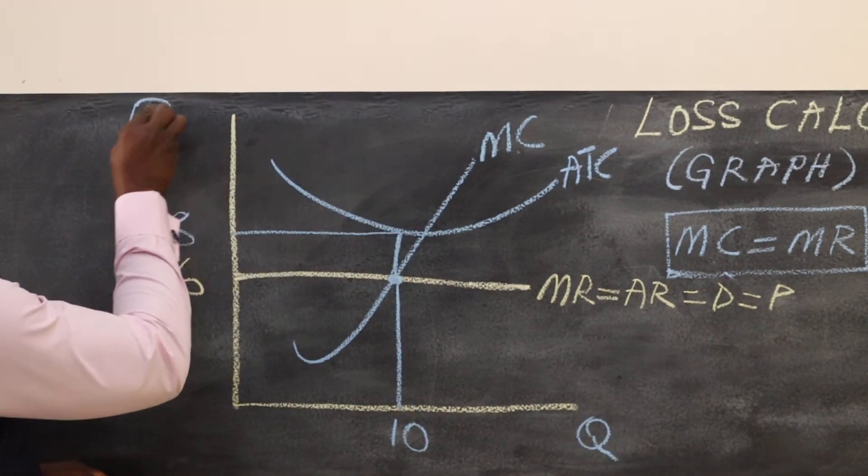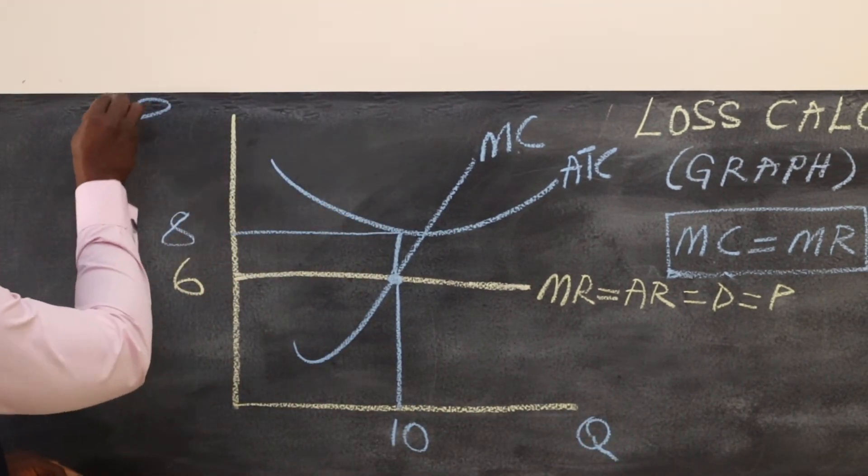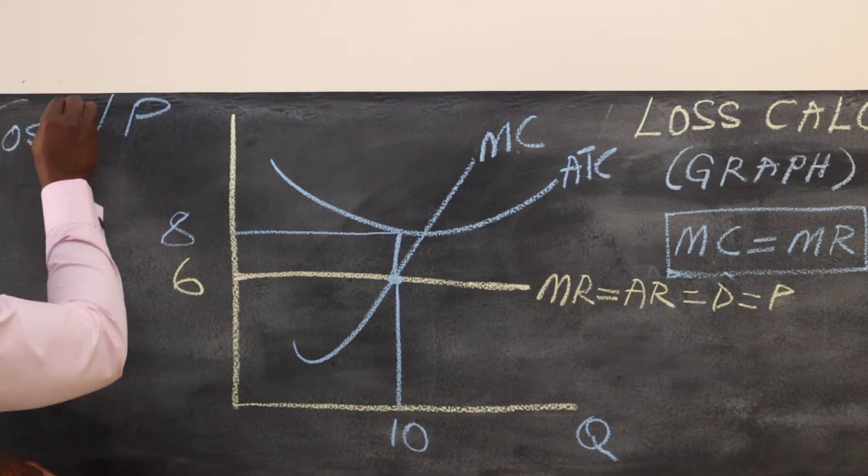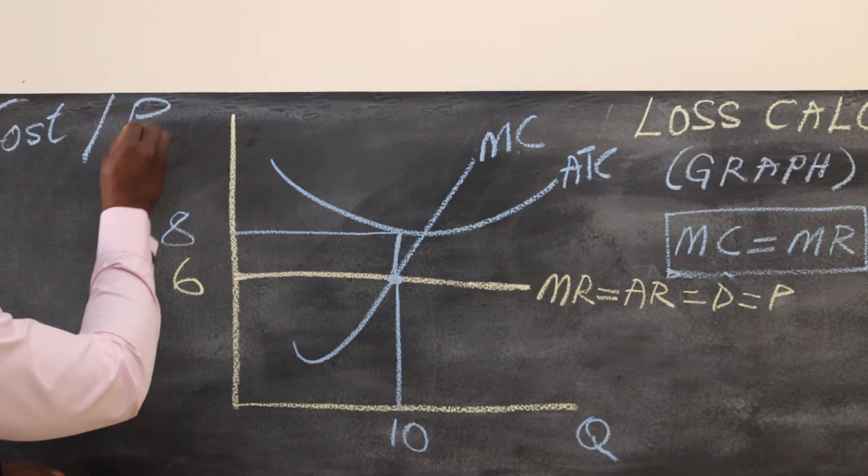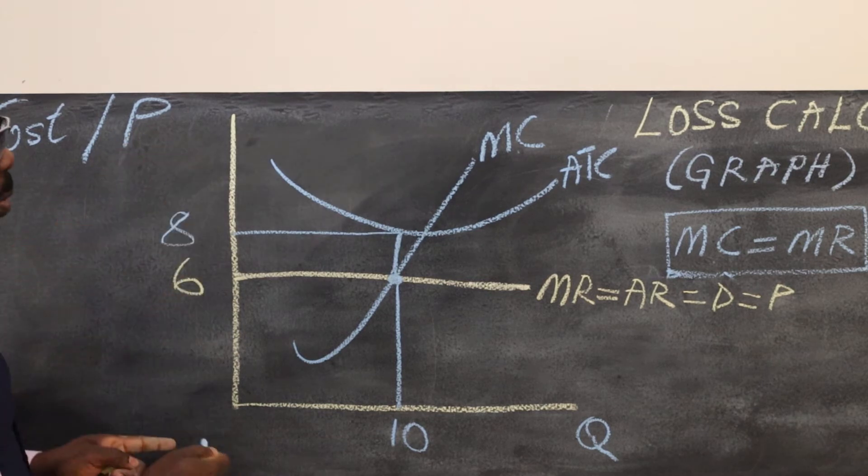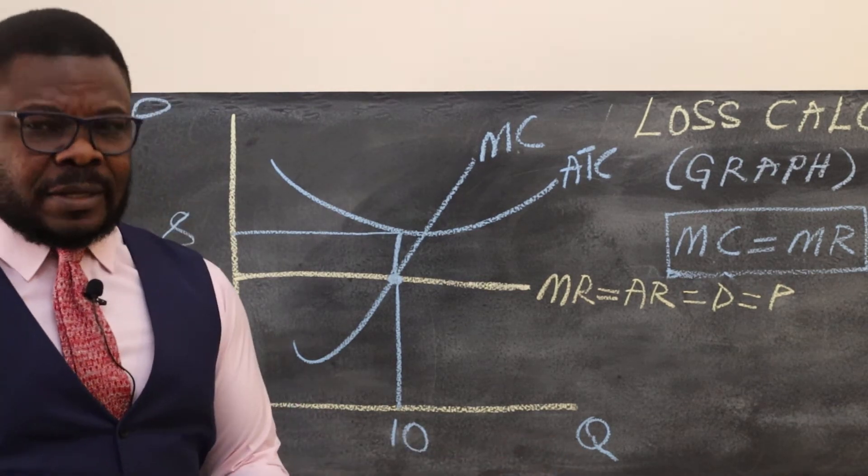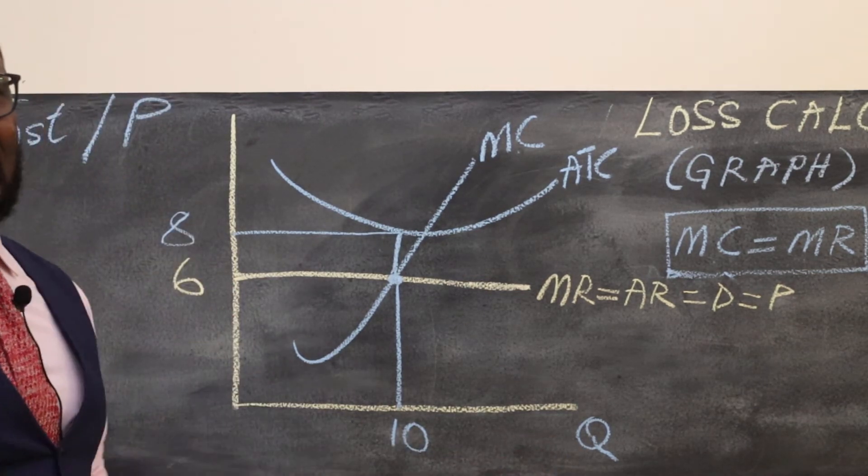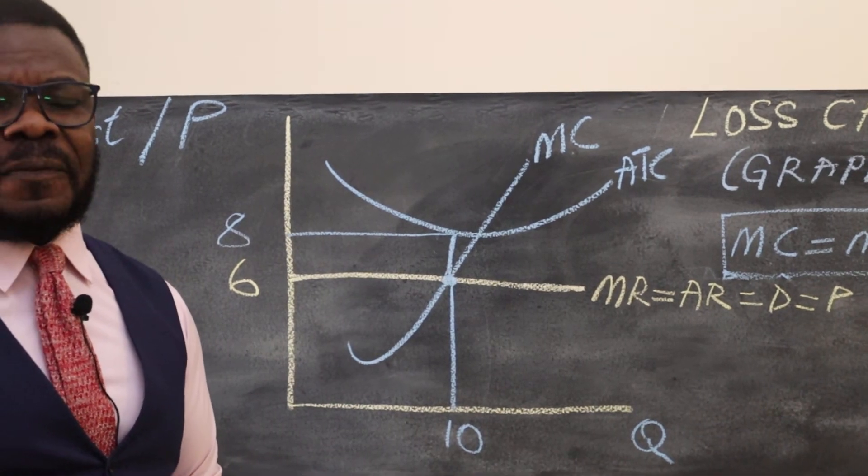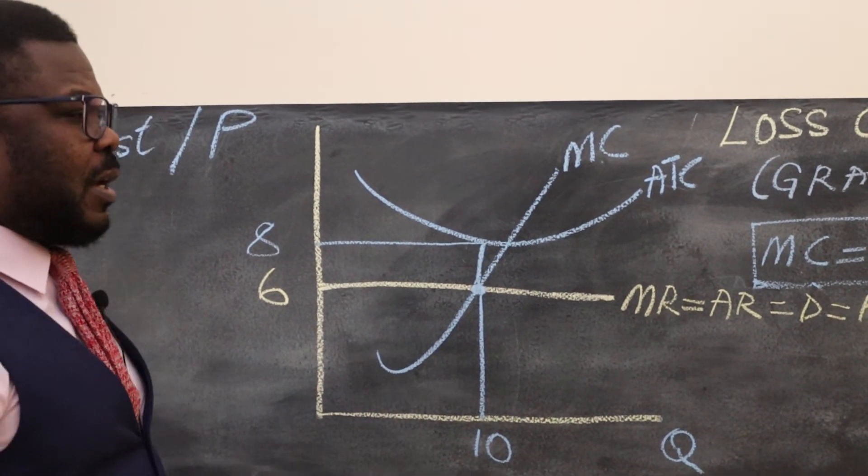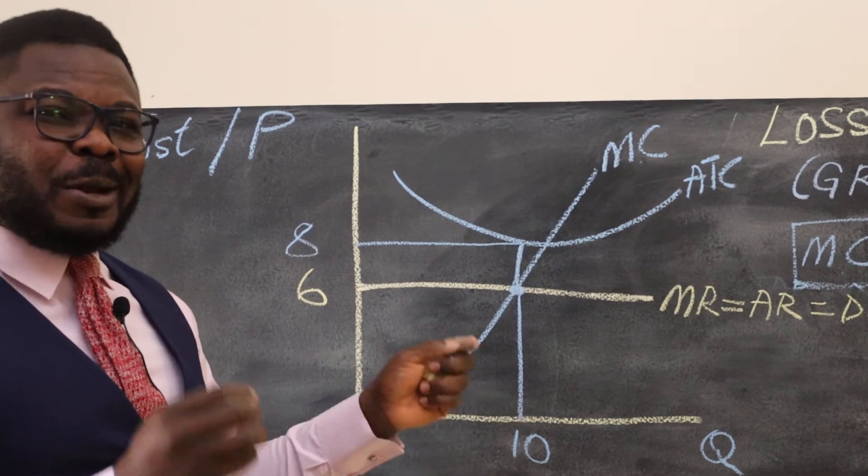We have to put our quantity here. Price and cost are all here - these are your quantities. From this, you can calculate whether the firm is making a loss or profit. Let's use our known formula: profit equals (price minus ATC) times quantity. We have the price - price is six.